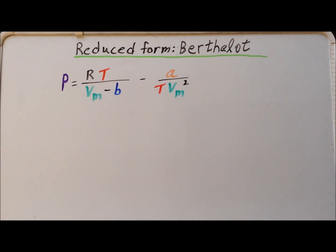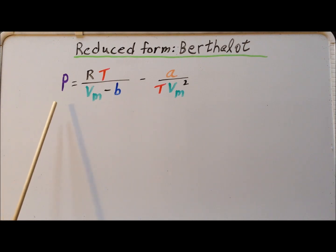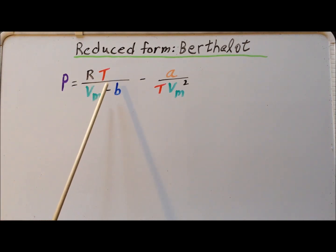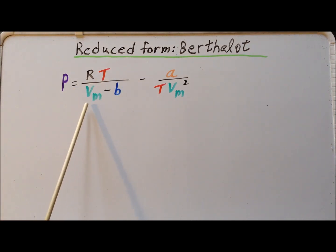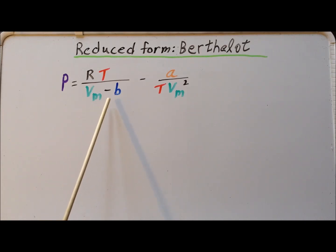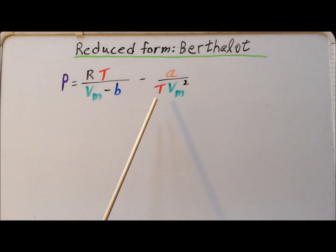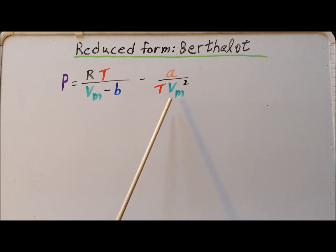We recall the following form for the Berthelot equation: the pressure P is equal to R times the temperature T divided by the molar volume V_M minus B, minus A divided by the temperature times the molar volume squared.